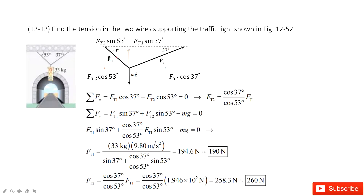Now we want to keep the object balanced, so the X components must be balanced. From this we find the relationship between Ft1 and Ft2. At the Y component, the forces are balanced, so the upward forces minus the downward forces equal zero. We input Ft2 into the equation, solve it to get Ft1, and then input Ft1 to get Ft2. Thank you.